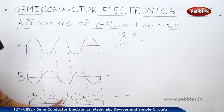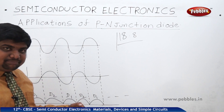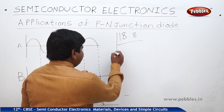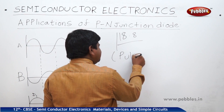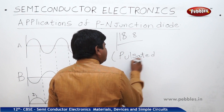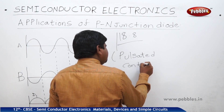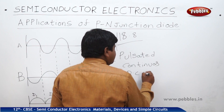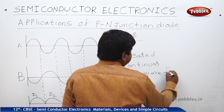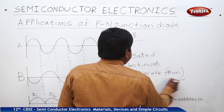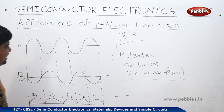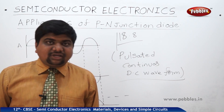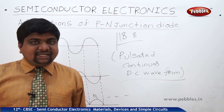So we can get the negative peaks also as a pulsated, continuous DC waveform. Like this, we can convert the AC current to DC current by using the diodes, and diodes do the work of rectification.